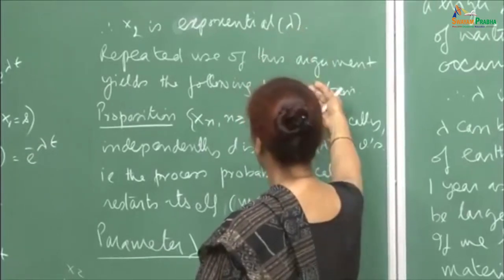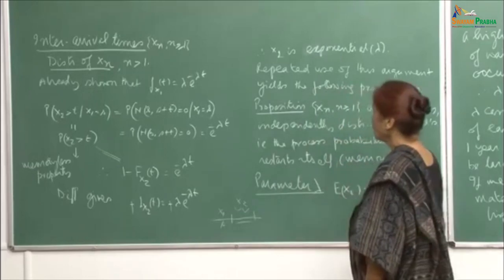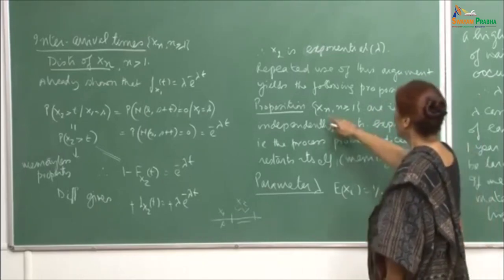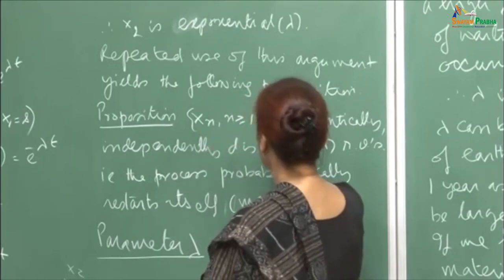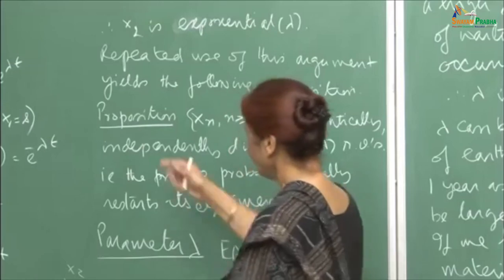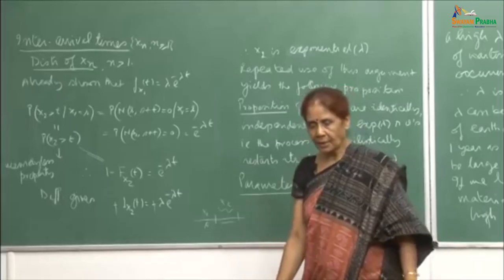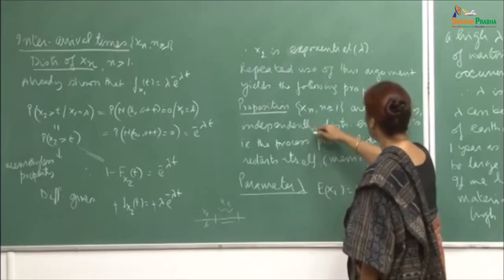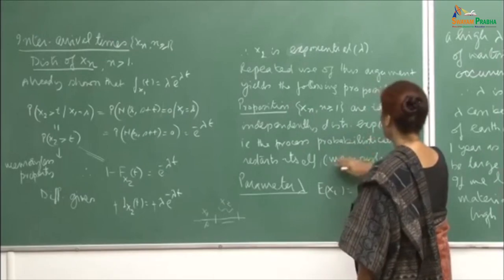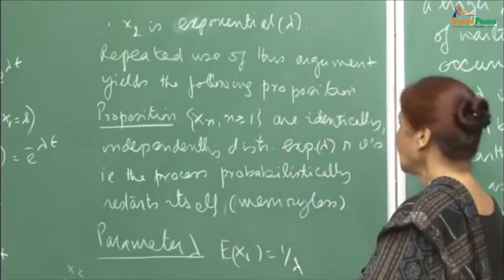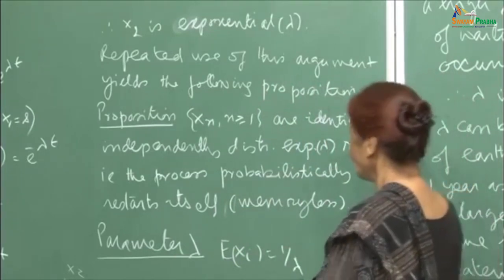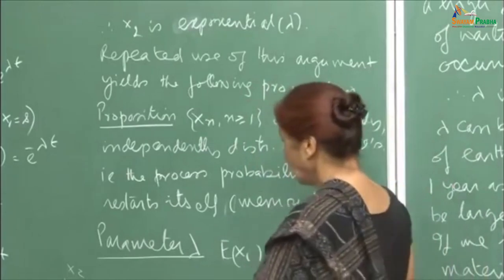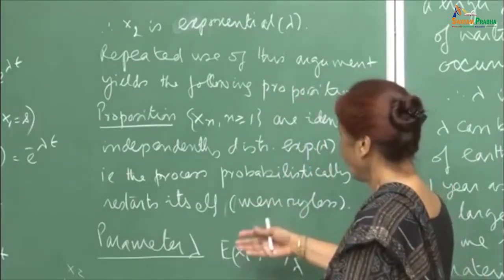By repeated use of this argument — essentially applying the memoryless property — the same result holds for X3, X4, and so on. This gives us the proposition that the sequence of inter-arrival times are identically independently distributed. Since we assumed independent and stationary increments for the Poisson process, the inter-arrival times are i.i.d. Exponential(λ) random variables.